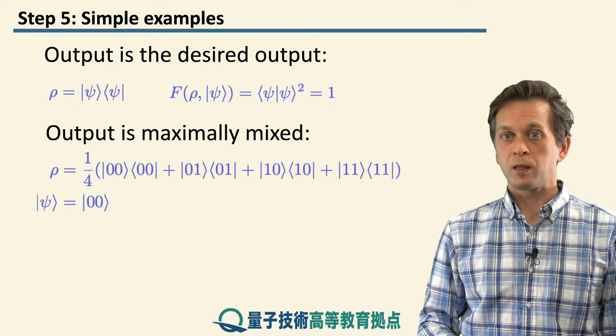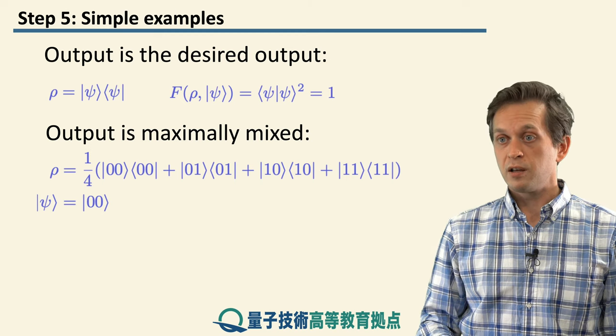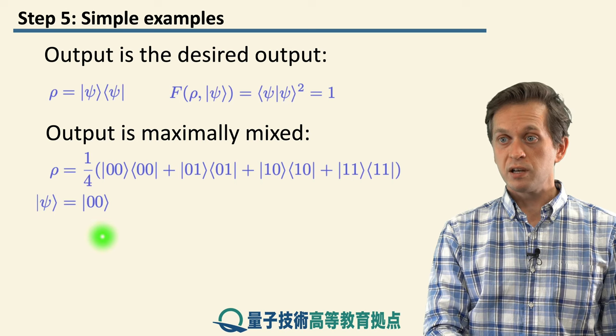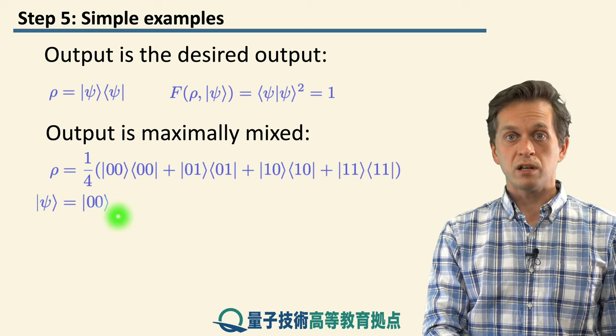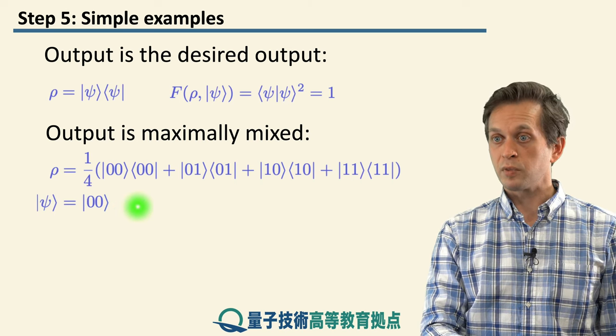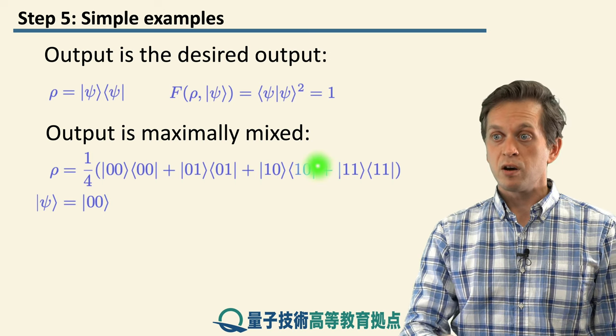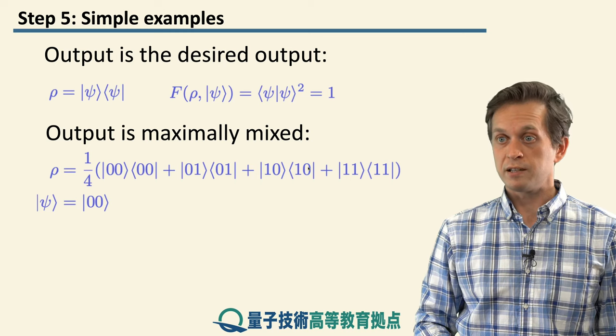What if we have two quantum bits, and we are trying to initialize them in the 0 state, but due to the imperfections in our laboratory, we get again a maximally mixed state, but this time of two qubits, written as that.